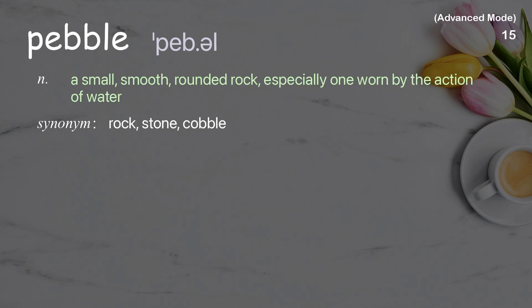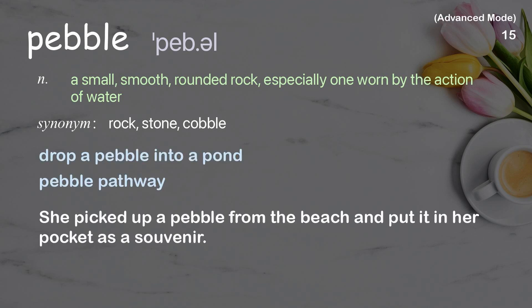Pebble: A small, smooth, rounded rock, especially one worn by the action of water. Examples: Drop a pebble into a pond. Pebble pathway. She picked up a pebble from the beach and put it in her pocket as a souvenir.